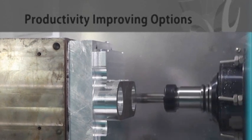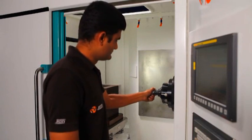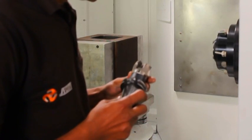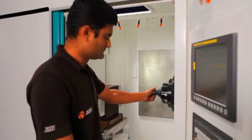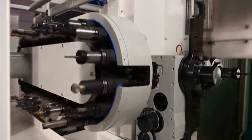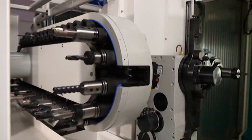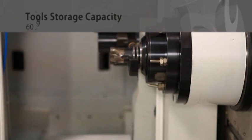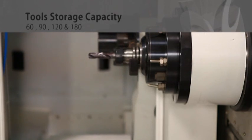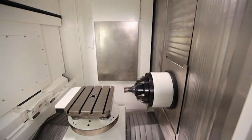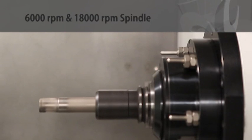Productivity improving options: The HMC series from Jyoti is specifically designed to increase the production capacity and simultaneously reduce the idle time. The HMC series comes with several productivity enhancements like higher tool capacity of 60, 90, 120, and 180 tools to match various applications.